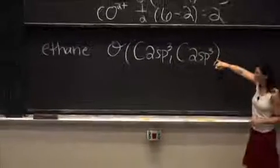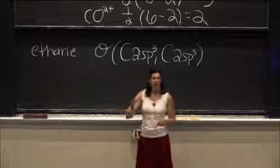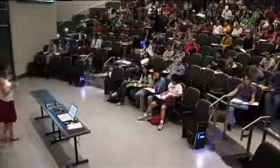All right, so this is our first type of bond here. Our second bond is going to be between the carbon and the hydrogen atoms. Is that a sigma or a pi bond? Sigma, good.